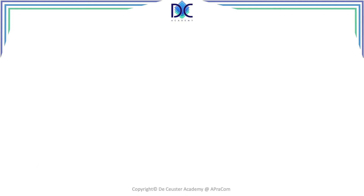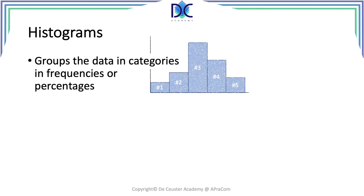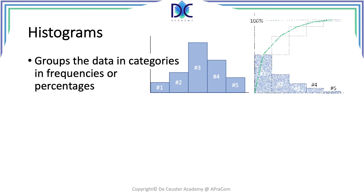We also have histograms — the classical histogram where we group data into categories. Then we have the 80-20 rule, the Pareto diagram, where we classify everything from high to low. The goal is to identify the category with the highest incidence so we can concentrate on that category to reduce errors on the project or the work we are doing.